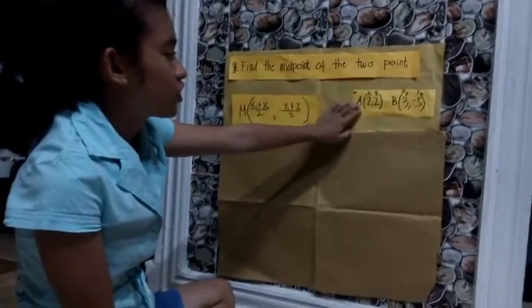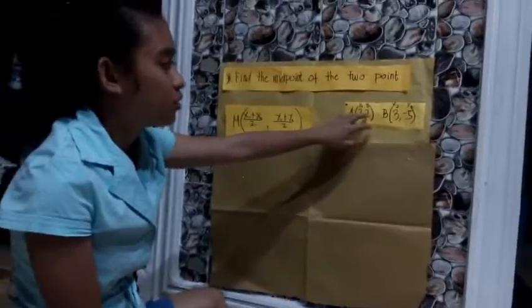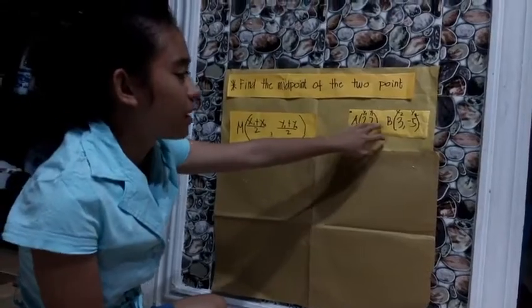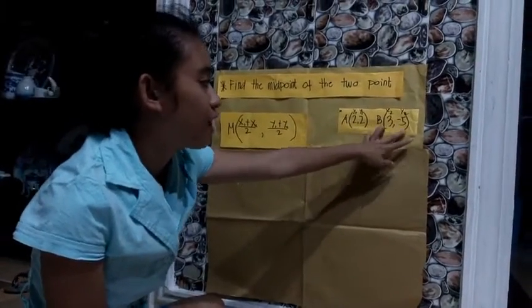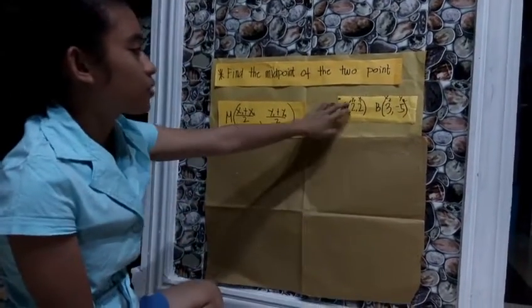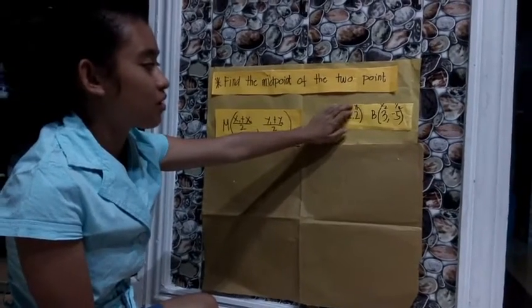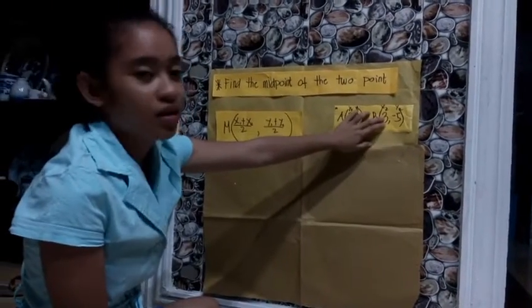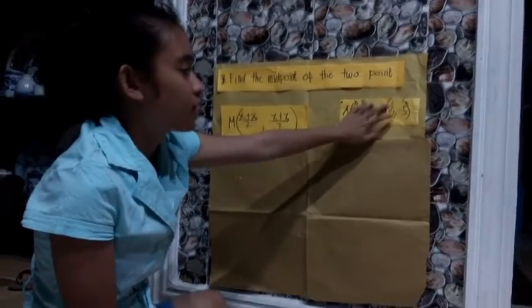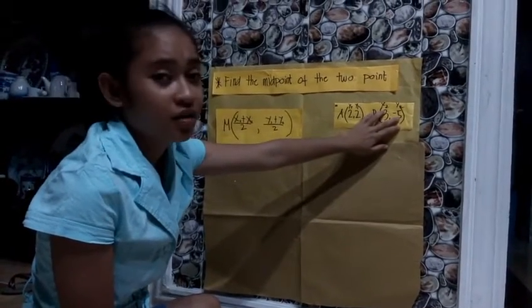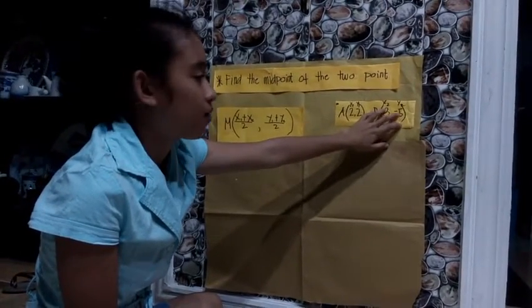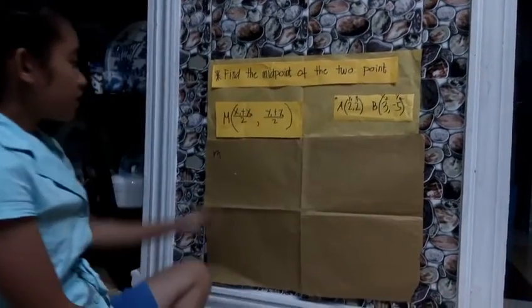Here is one example of the midpoint: find the midpoint of the two points A(2, 2) and B(3, -5). So 2 is our x₁, 2 is our y₁, 3 is our x₂, and negative 5 is our y₂.